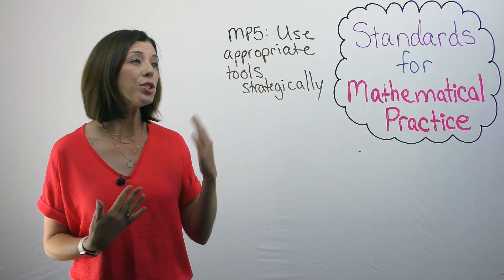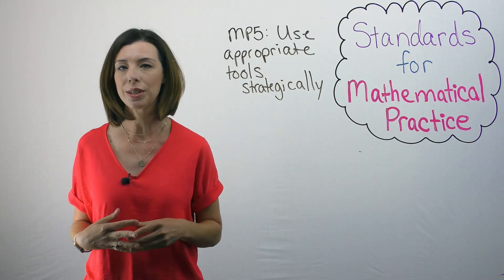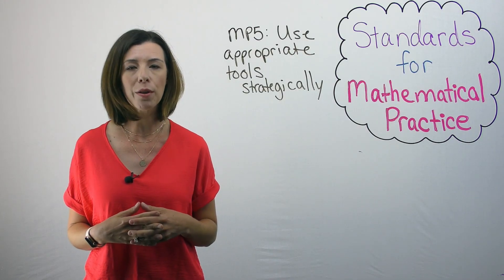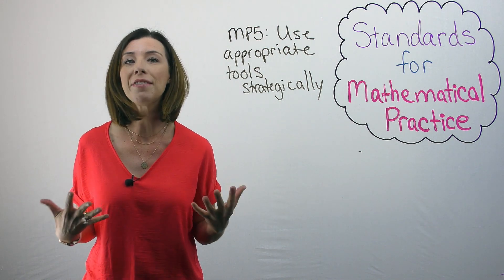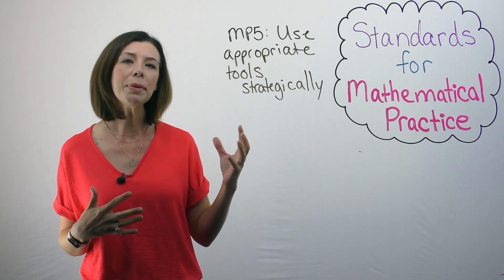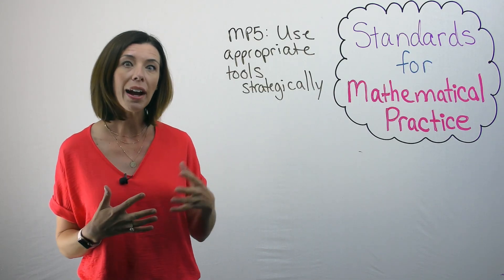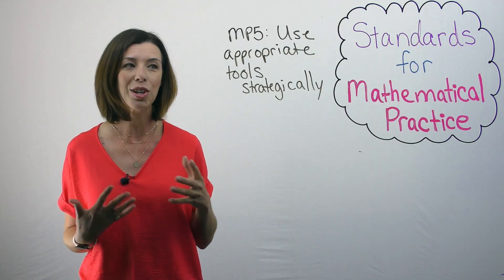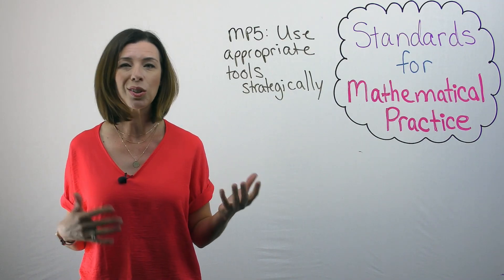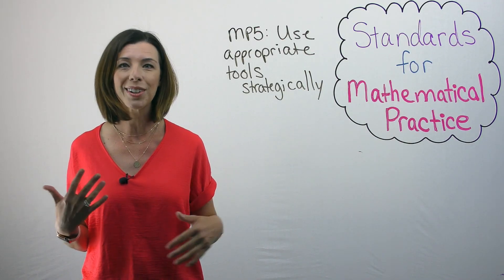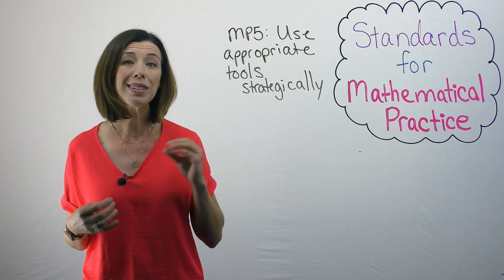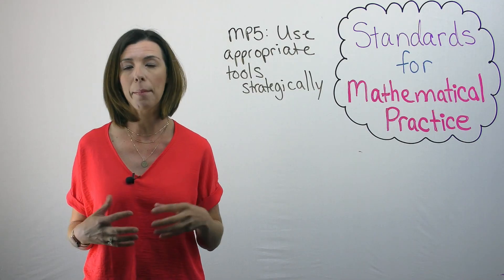Mathematical practice number five is to use appropriate tools strategically. If we're posing the question of what tools should we use to measure how heavy something is, we want students to know that it's a scale, not a ruler. So in our lessons, we want to provide them with multiple tools and have them make the decision — I need a scale, I don't need a ruler. Or if they're measuring an angle, maybe they need a protractor, not a ruler. We want them to actually select those tools without us selecting them for them.